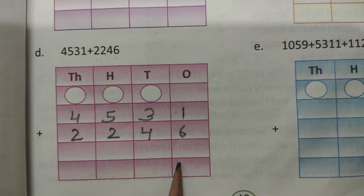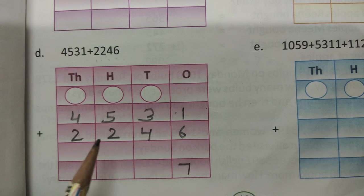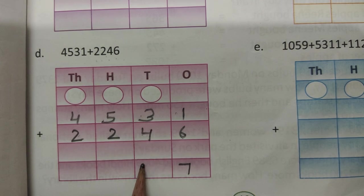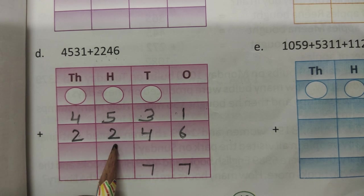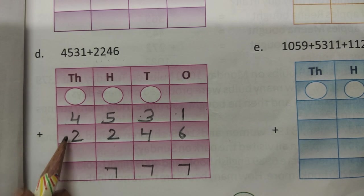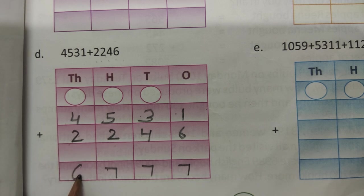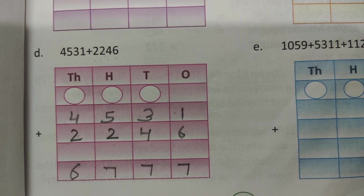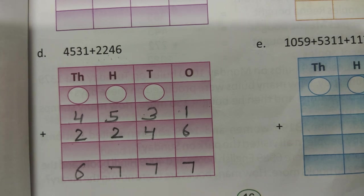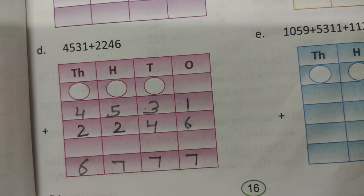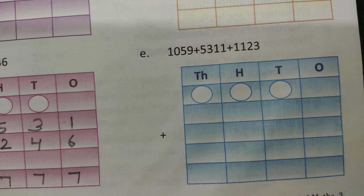Add the number now. 6 and 1 is 7. Add the number now: 4 and 3 is 7, 5 and 2 is 7, and 4 and 2 is 6. So answer is 6777. Is that clear? Any problem all of you? Please tell me. Yes or no?